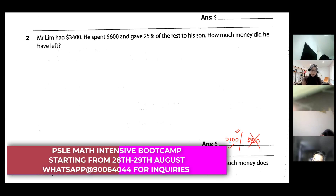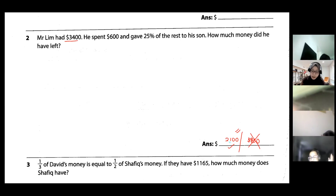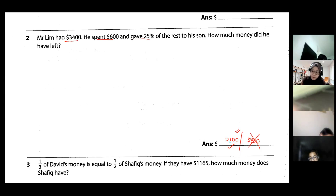Mr. Lim had three thousand four hundred dollars — this is his total amount of money. He spent six hundred dollars and gave twenty-five percent of the rest to his son. How much money did he have left?